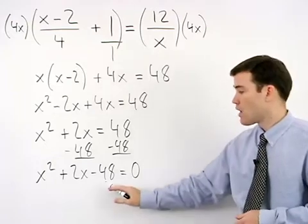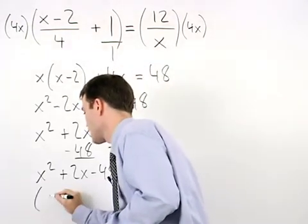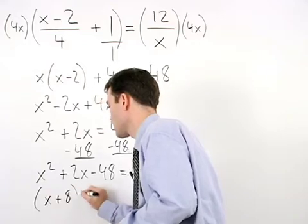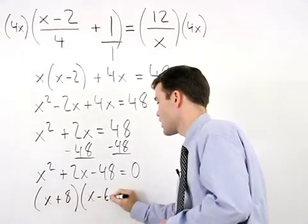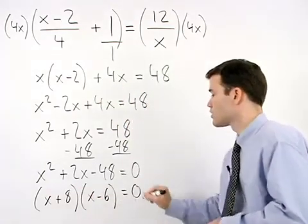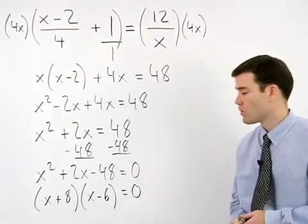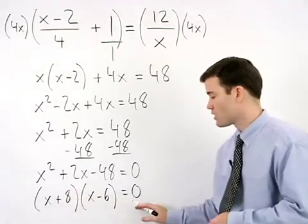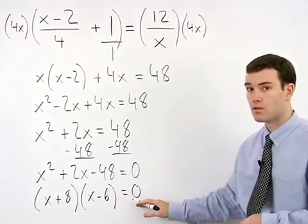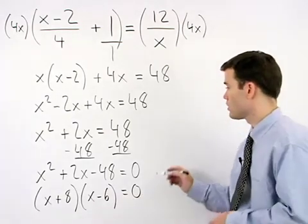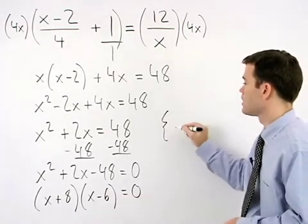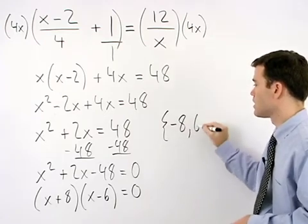Now we can factor to get x plus 8 times x minus 6 equals 0. So either x plus 8 equals 0 or x minus 6 equals 0, which means that our solution set is negative 8, 6.